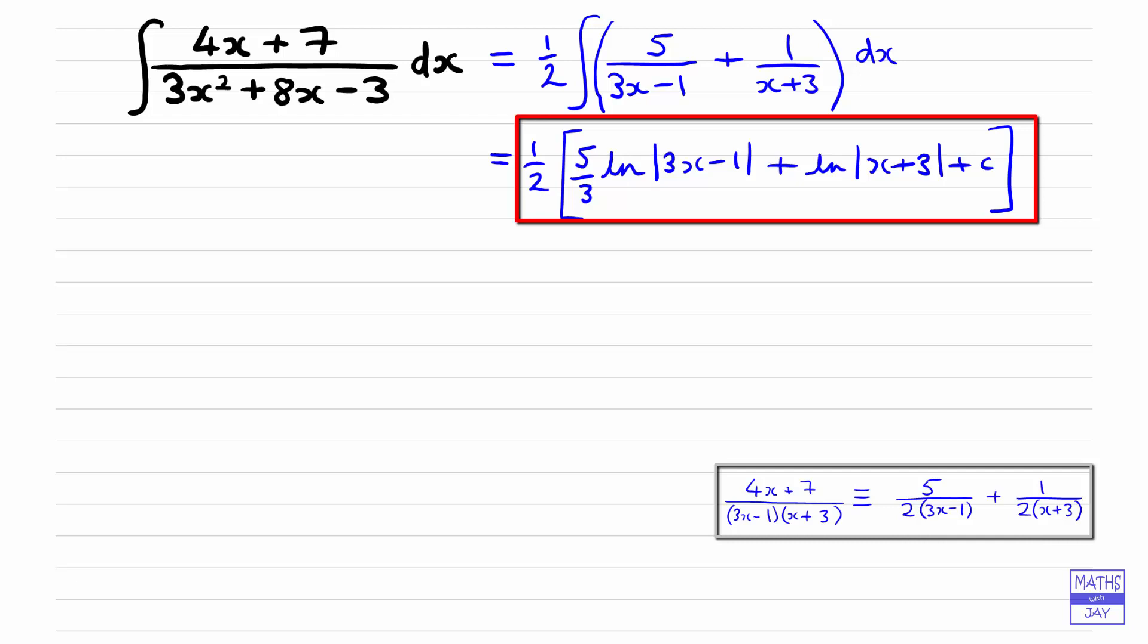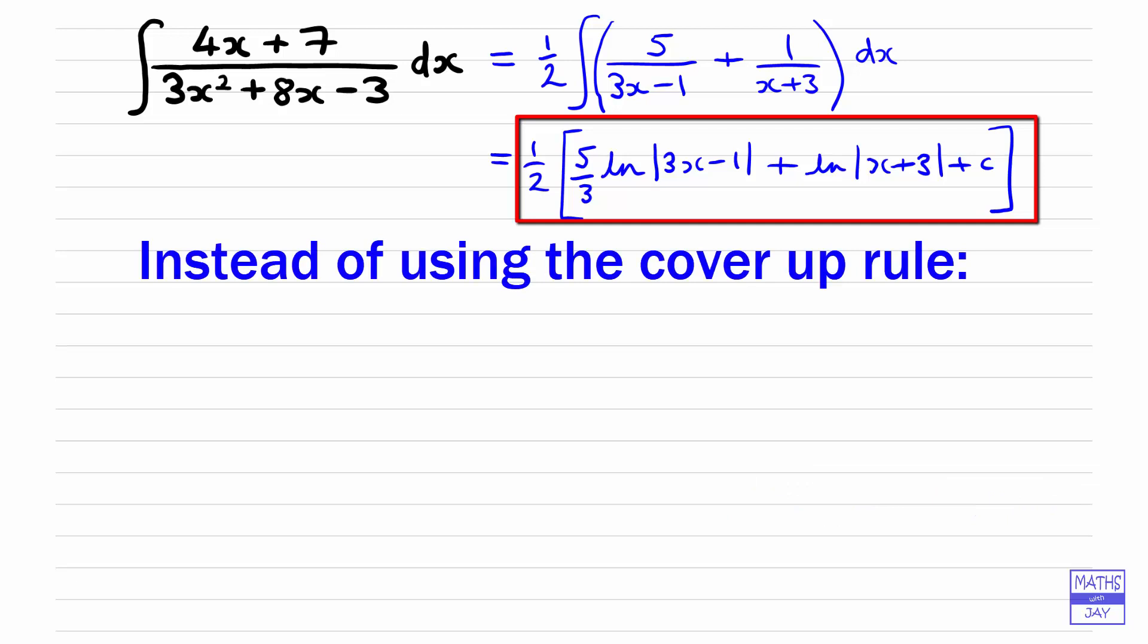So that's one way of writing the answer. You might want to write your answer as a single log, in which case you would want to write the constant of integration as a log of another constant, and then you could gather up all the terms and write them as the log of one big complicated looking expression. Okay, so that's the answer. So if you're not happy at writing down the original fraction as two partial fractions by using the cover-up rule, you might like to watch this bit where we're going to look at how to write it out in full.